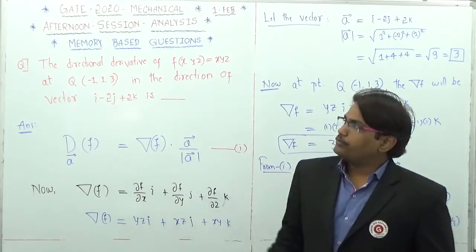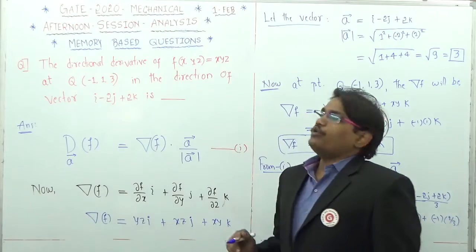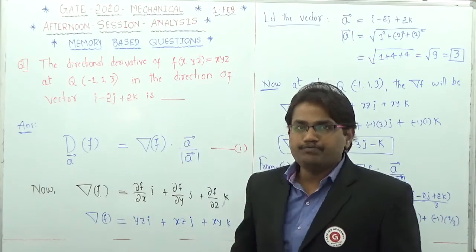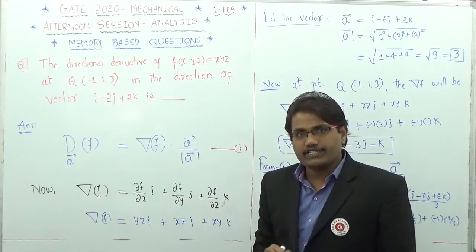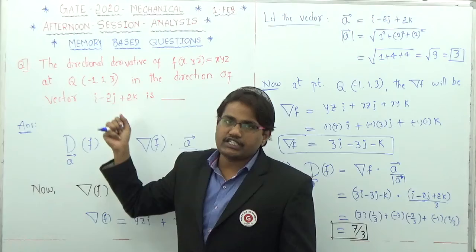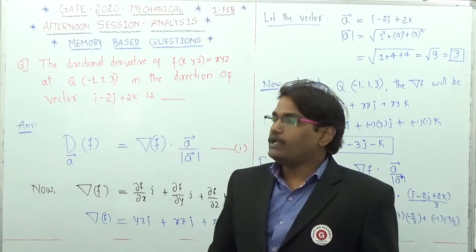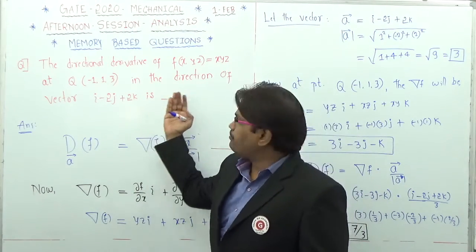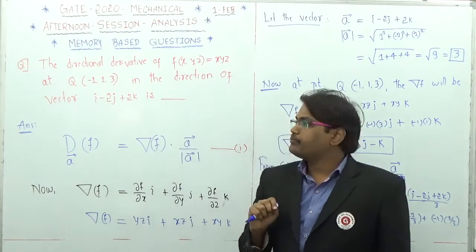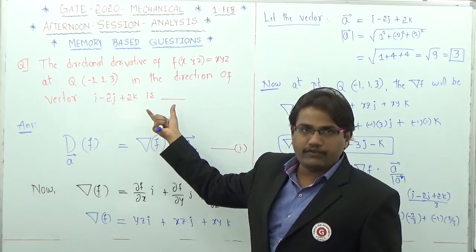This question is from mathematics. The directional derivative of a scalar function f(x,y,z) = xyz is given. We want the directional derivative at the point (-1, 1, 3) in the direction of the vector i minus 2j plus 2k.